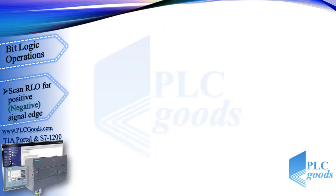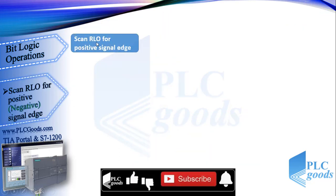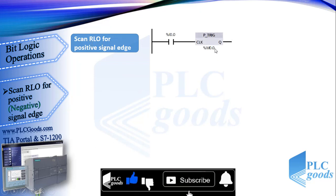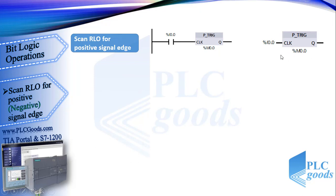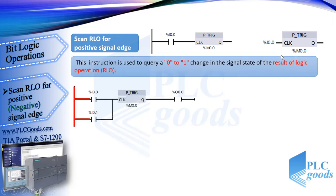Now I want to explain an instruction which scans RLO for positive signal edge. This is its ladder symbol. Unlike the previous instruction, this only needs one memory address to work correctly, and this is its FBD symbol. This instruction is used to query a 0 to 1 change in the signal state of the result of logic operation, RLO.